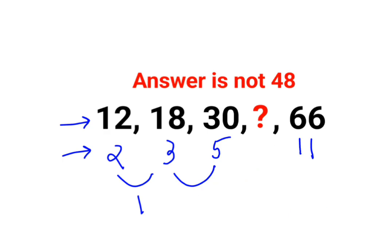Now what is the other logic? If you look at all of these numbers, these are prime numbers. So what is the next number which comes after 5 and before 11? That is 7. So here what we will do is we will multiply 7 with 6.